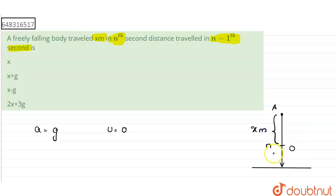Okay, now at n minus 1 seconds, that is before n, so in n minus 1 seconds, the body has traveled a small distance which is less than x meters, and we have to find that distance. Let this point be marked as B. So we have to find AB.